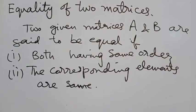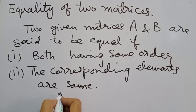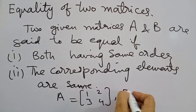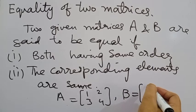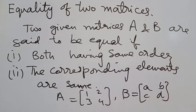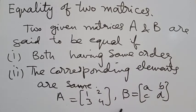For example, let us have a matrix A having 1, 2, 3, 4 and B also has elements A, B, C, D. So, we are not able to say that these are equal matrix because first condition they satisfied, both having same order. This is 2 cross 2 and this is also 2 cross 2. But the corresponding elements are not same. So, this condition is not fulfilled.